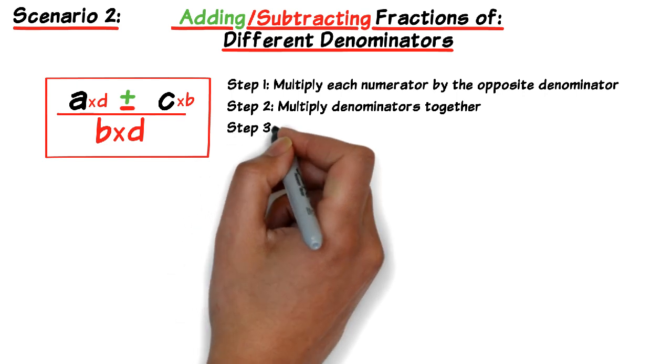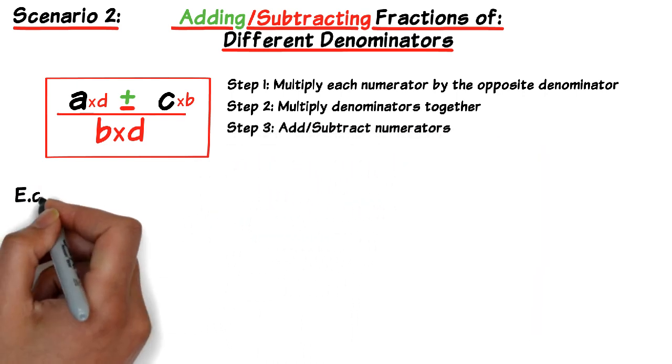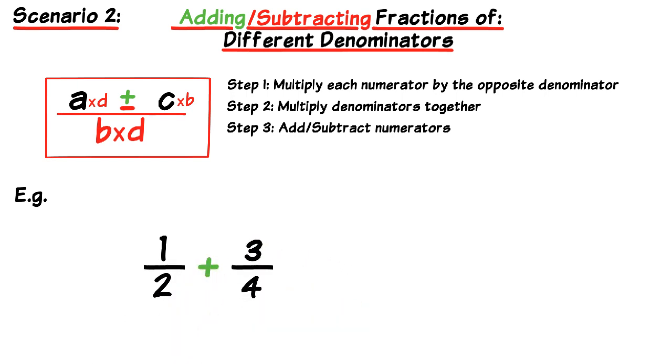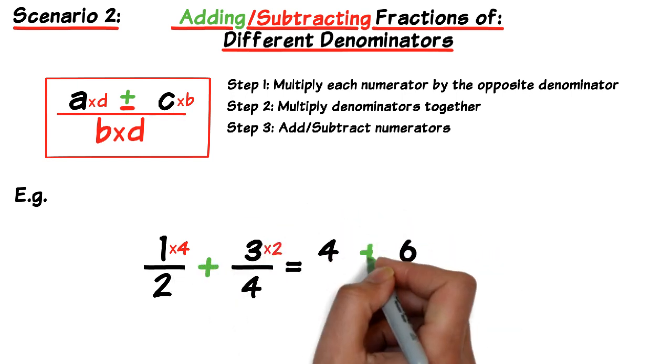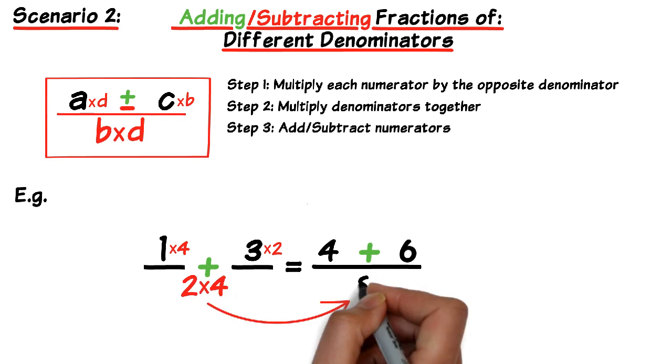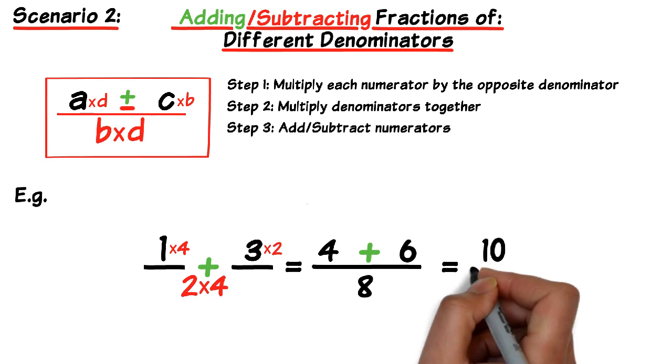So for instance if we consider the fraction 1 over 2 plus 3 over 4. So what we do first is we cross multiply each numerator by the opposite denominator. So the 4 comes up and multiplies by the 1. So 1 times 4 is 4. And the 2 goes up and multiplies by the 3. So 3 times 2 is 6. The plus sign stays the same. And we also multiply the two denominators. So 2 times 4 is 8. So we have 4 plus 6 over 8 which equals 10 over 8.